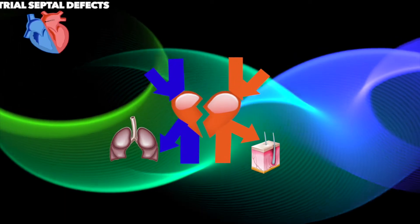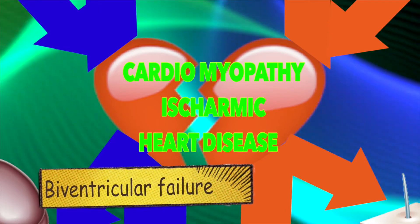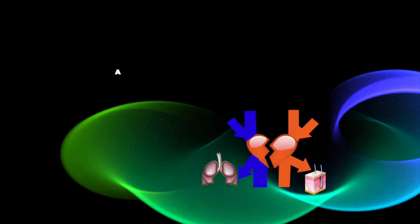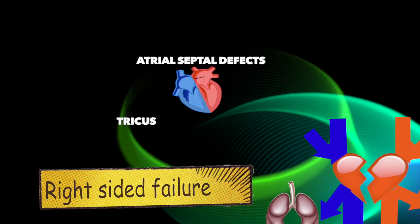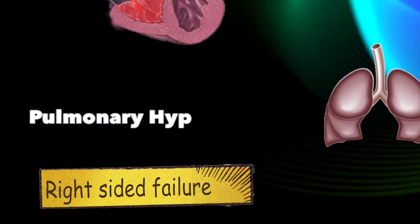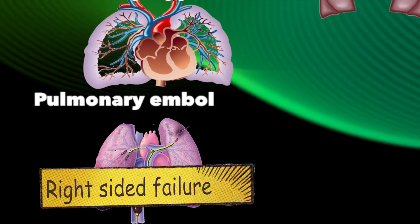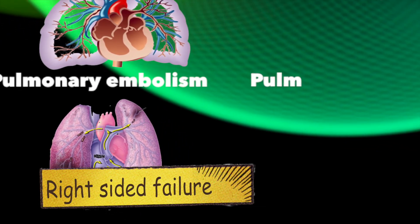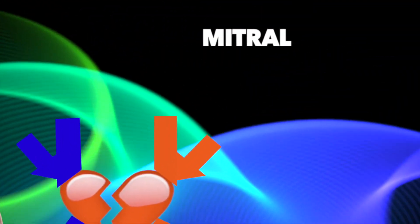As regards causes of heart failure, biventricular heart failure is caused by cardiomyopathy, ischemic heart disease, and left-side-induced right-sided failure. Causes of right-sided failure include increased venous load, such as atrial septal defect and tricuspid incompetence, and increased pressure load, such as pulmonary hypertension, pulmonary embolism, and pulmonary stenosis.